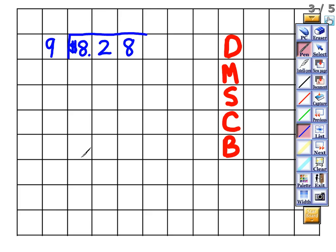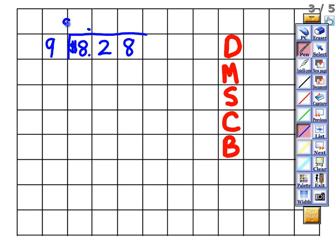Now we have $8.28 divided by nine. Remember, whenever we divide with money, the same exact rules apply — divide, multiply, subtract, check, bring down. The only difference is the dollar sign and decimal point. The first thing we do is put that decimal point and dollar sign right up in our quotient so we do not forget. Now we can divide like we normally would.